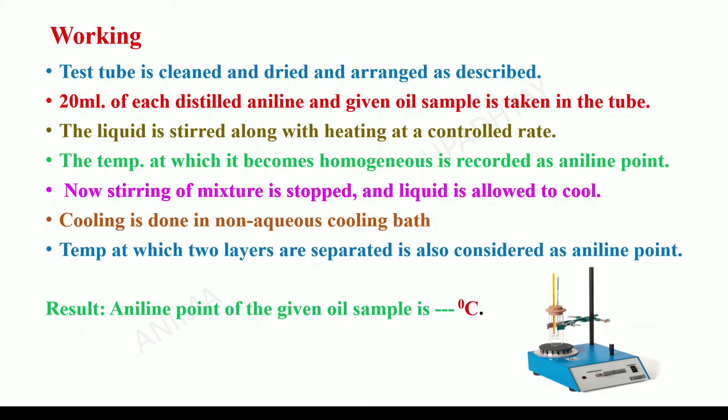In the test tube, which is cleaned thoroughly and dried in a hot air oven, 20 ml each of distilled aniline and the given oil sample is taken. The liquid is then stirred with the help of an electric stirrer. If it does not get thoroughly mixed with each other at room temperature, the electric heater is started and heating is done at a controlled rate. The temperature at which the two layers mix with each other forming a homogeneous mixture is recorded as aniline point.